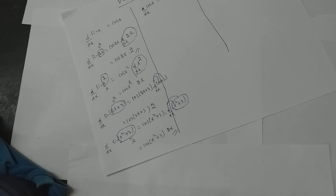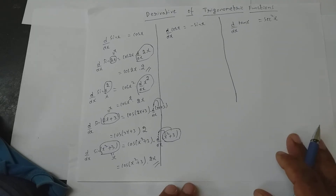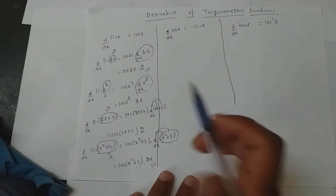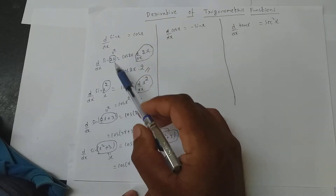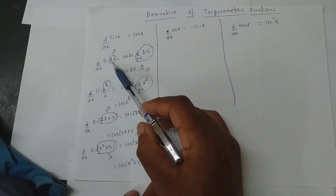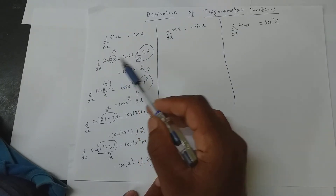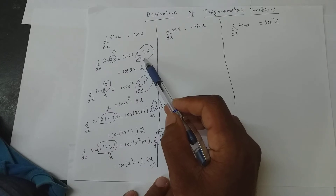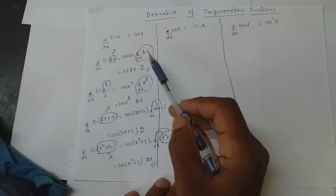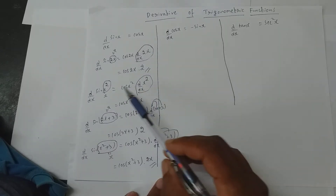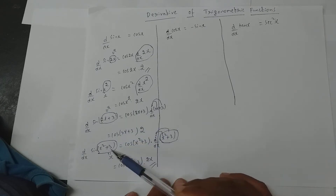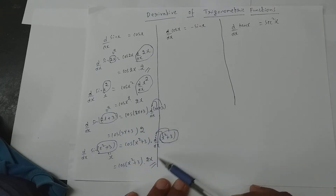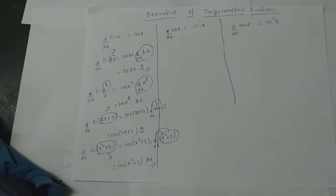So to summarize: sin x is cos x, but if you have something else in place of x, that derivative must and should be there at the end. So if it is x square you get 2x, if it is 2x plus 3 you get 2, if it is x square plus 3 you get 2x.